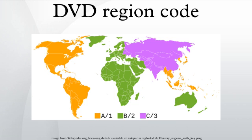DVD region codes are a digital rights management technique designed to allow film distributors to control aspects of a release, including content, release date, and price, according to the region. This is achieved by way of region-locked DVD players, which will play back only DVDs encoded to their region.